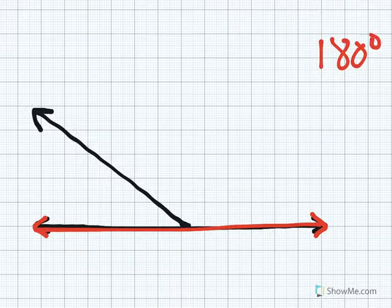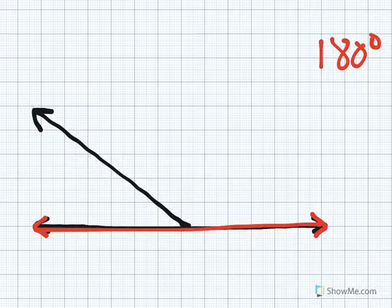When two angles are added together and equal 180 degrees they are called supplementary angles. In this picture you will see two angles.